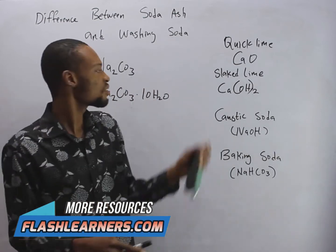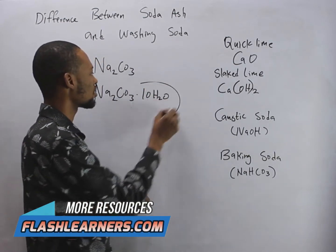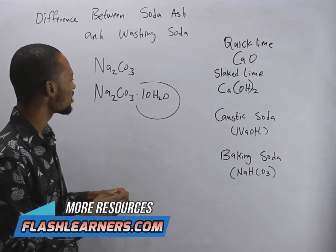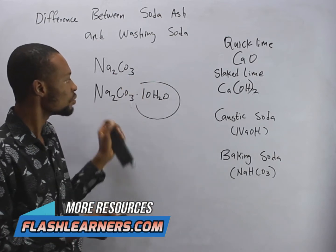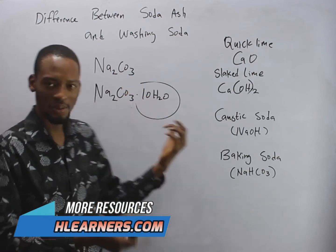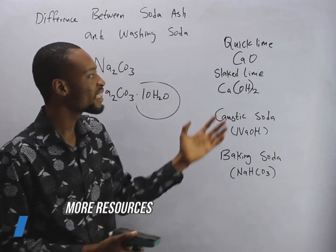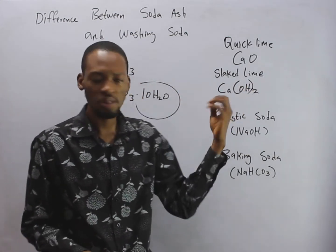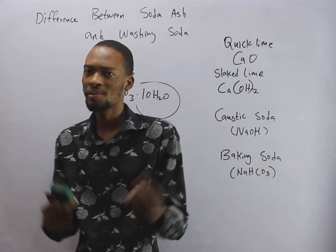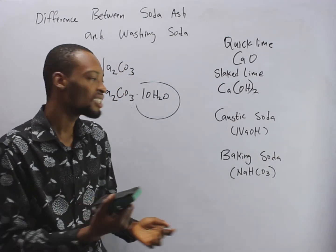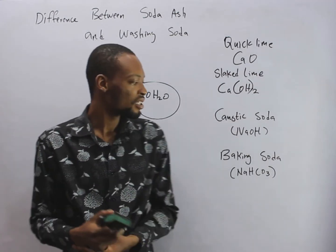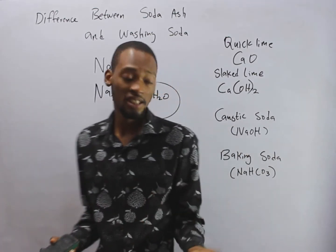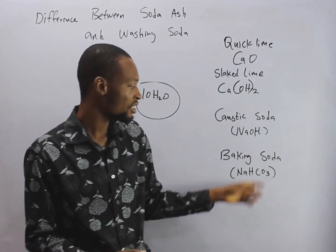So that is the difference between soda ash and washing soda. If there is no water of crystallization, we are dealing with soda ash. When it has 10H2O it becomes washing soda. And don't forget: quicklime is calcium oxide; when calcium oxide is mixed with water it forms slaked lime.